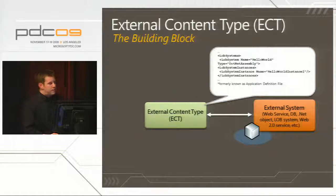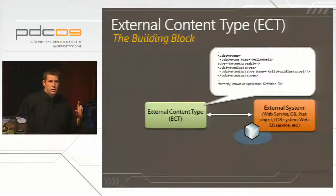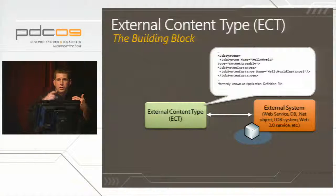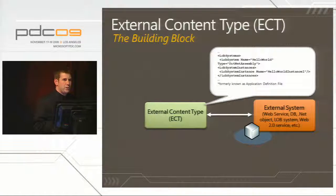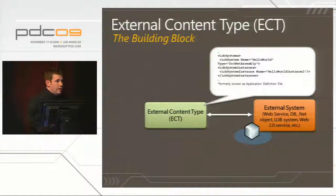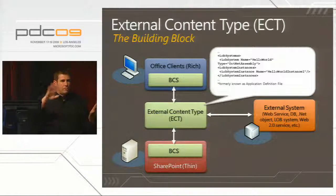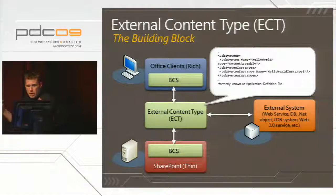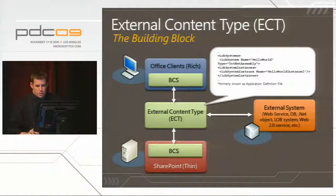The external content type uses a lot of the same elements and taxonomy from the schema you've known before. What's different is you'll have additional operations. In 2007, I could only articulate a get — I couldn't articulate a put. Now we're adding additional operations which allow us to build CRUD operations against our external data source. The ECT schema file lies at the heart of creating that relationship with the back-end data source — and you can build it for SharePoint or offline it for the client.